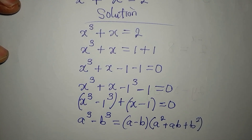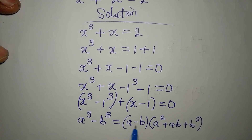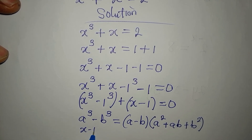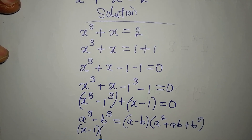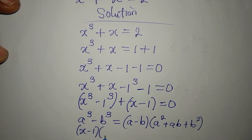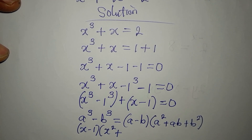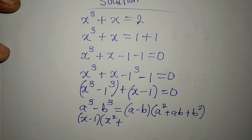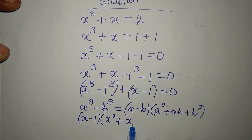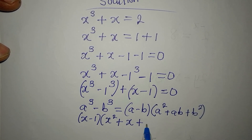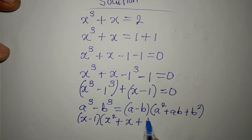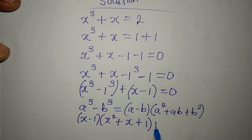Our a is x and our b is 1. So a minus b becomes x − 1, then a² is x², ab is x times 1 which is x, and b² is 1² which is 1. This gives us (x − 1)(x² + x + 1).